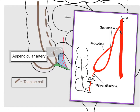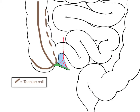The venous drainage of the appendix is via vessels to the superior mesenteric vein and into the portal system. During an appendicectomy, the mesentery and the blood vessels in it must be divided in order to mobilise the appendix prior to its removal.